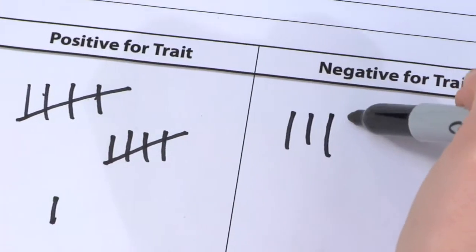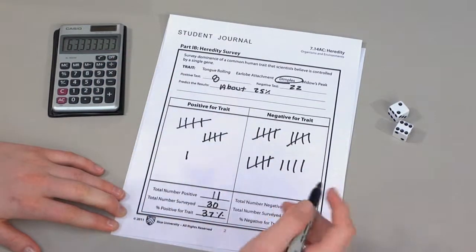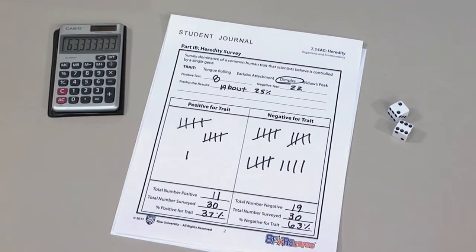Record the results of 30 individuals. Total both positive and negative numbers and calculate percentages of each. Do the survey results support student predictions?